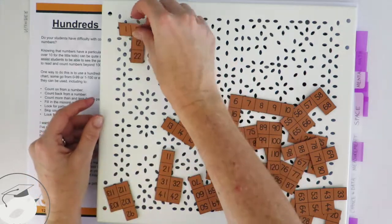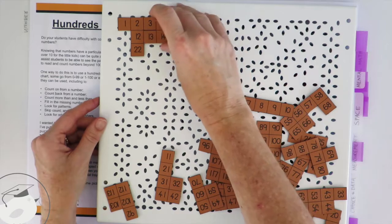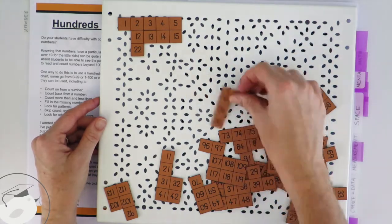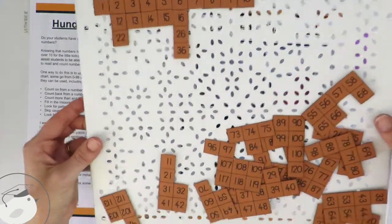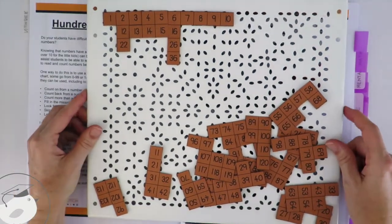So again, you get your students to pop them in the order that they go, practicing their counting skills. What's great about the magnetic strips is obviously they don't fall off either, which is always a bonus.